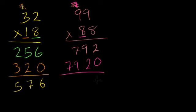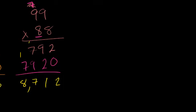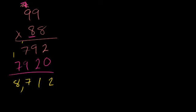2 plus 0 is 2. 9 plus 2 is 11, carry the 1. 1 plus 7 is 8. 8 plus 9 is 17, carry the 1. 1 plus 7 is 8. 8,712. Let's keep going. Can't do enough of these.